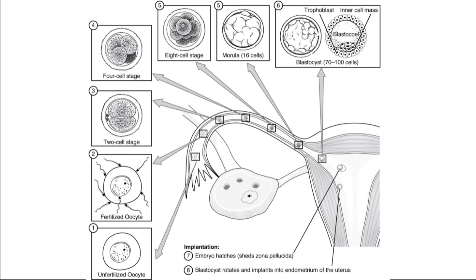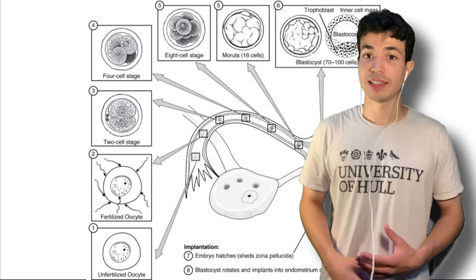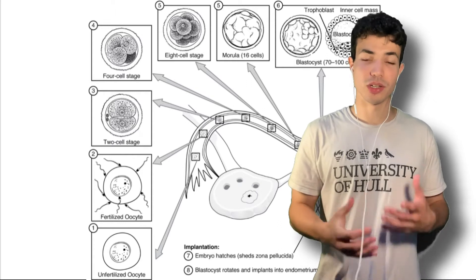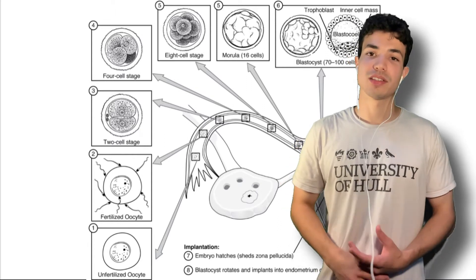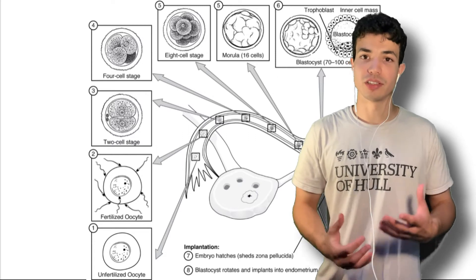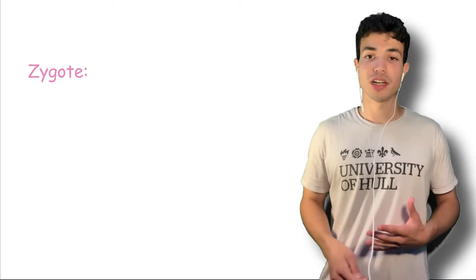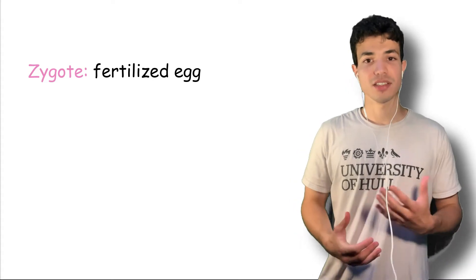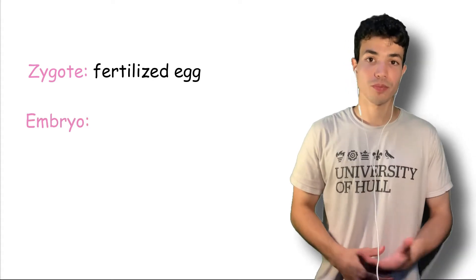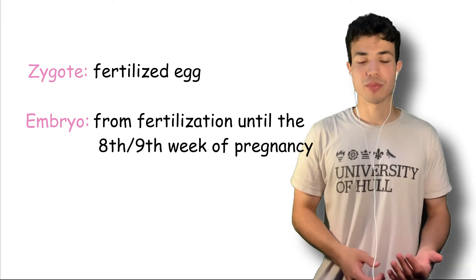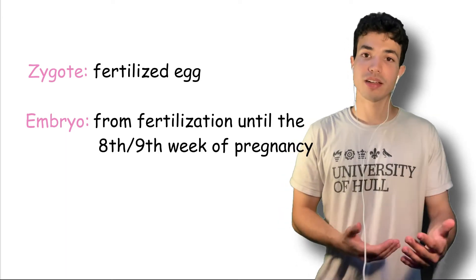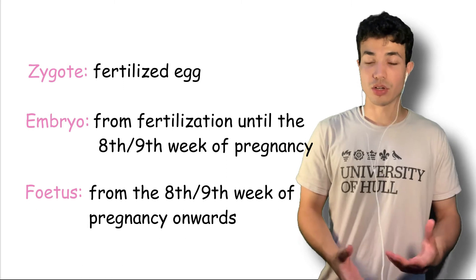This will then contain four cells, eight cells, sixteen cells and so on. Before we look at the developing embryo in detail, let's make sure we know some important terminology in early embryogenesis. A zygote is the term for a fertilized egg. As that egg starts developing it becomes an embryo — up to the ninth week after conception — and after that it is called a fetus.